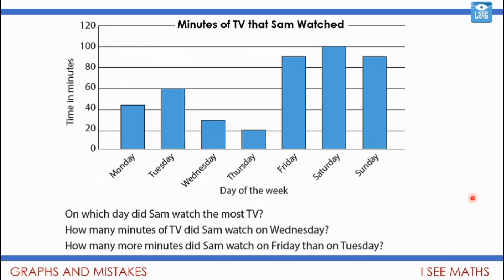We've also looked at interpreting bar charts, thinking about when you just need to read from one bar versus comparing different bars. Here's a question: this bar chart shows the minutes of TV that Sam watched in a week. For the questions, think — do I need just one reading, or do I need to look at more than one bar, and how do I know? Pause the video and have a go at those three questions.